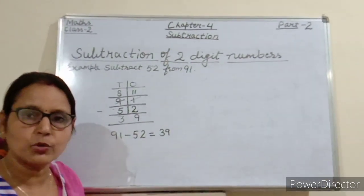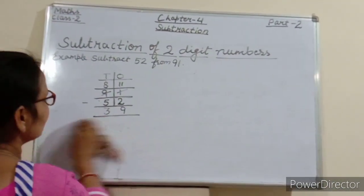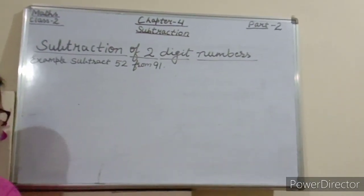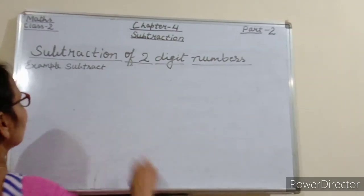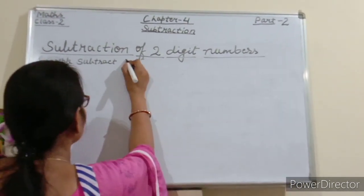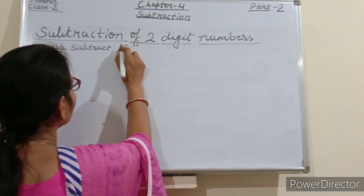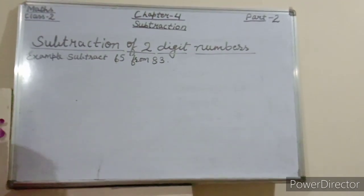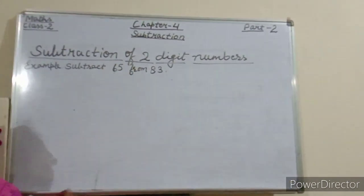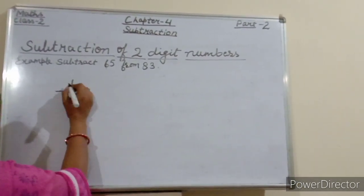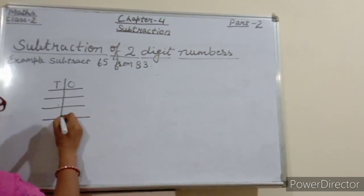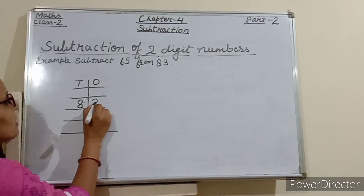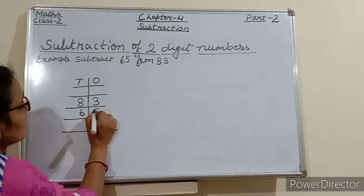Students, one more example I am giving you. See the next example: subtract 65 from 83. So again, what we have to do? We have to arrange these numbers in the column. Here, 83 is the bigger number, so we will write 83 here, and smaller number 65 we will write here.